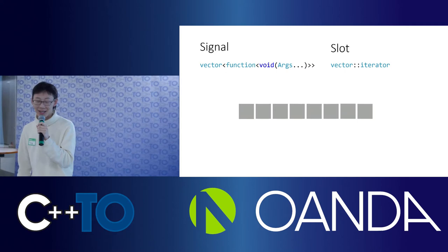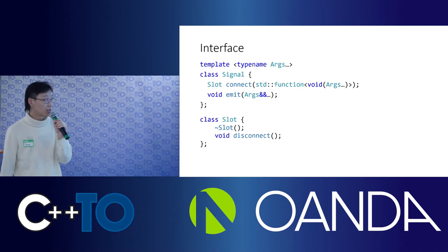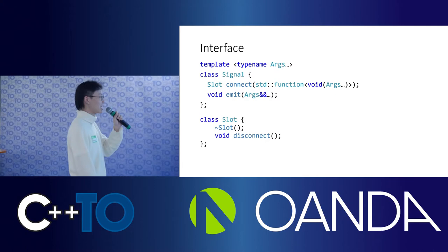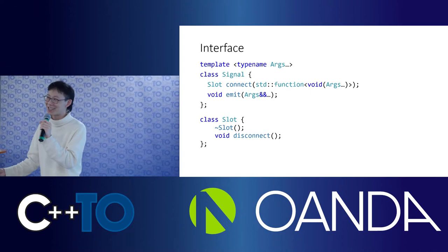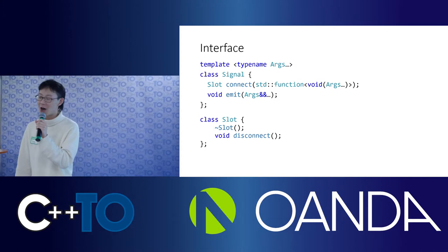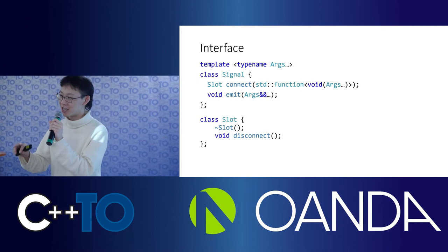If we think of it as a data structure, the interface of signal slots contains only three methods. The first one is connect — a slot can be connected to a signal, which is basically registering a callback into a signal or an event. Like in UI programming, you can say when the mouse is clicked, do something. That is connect.